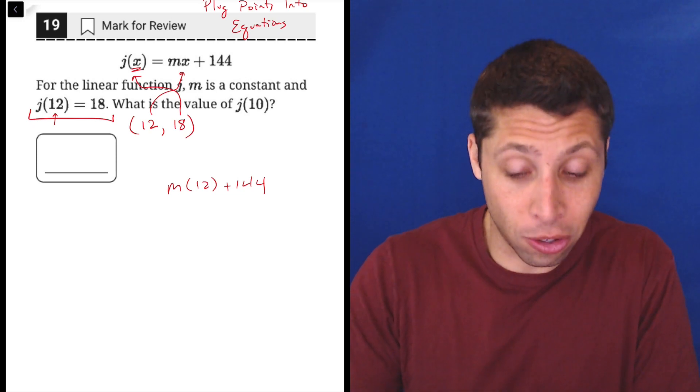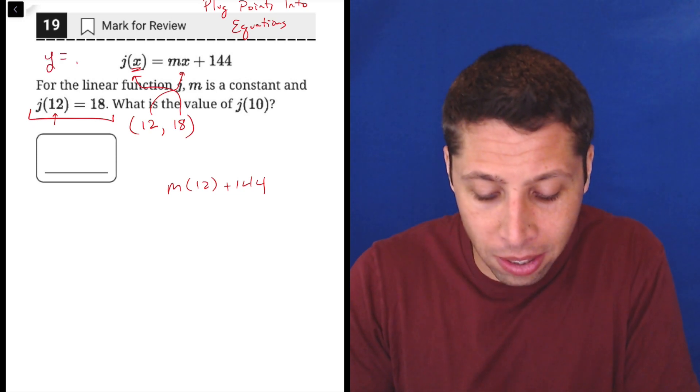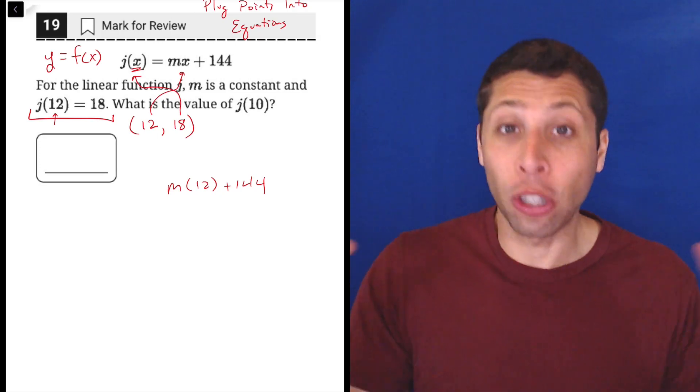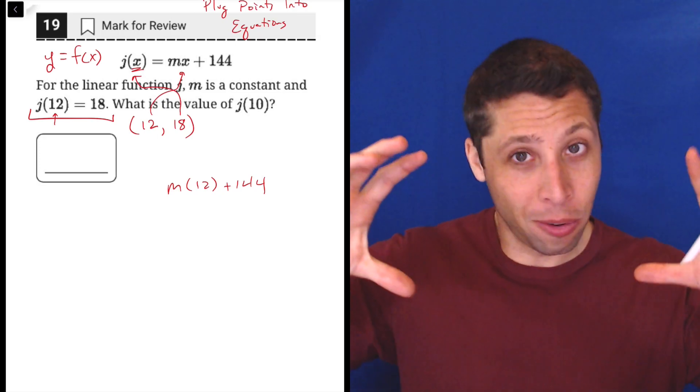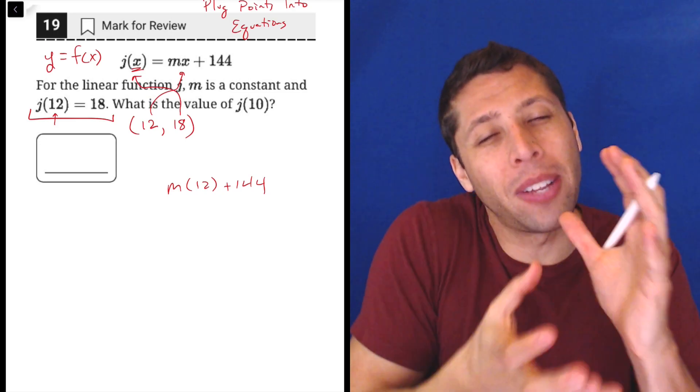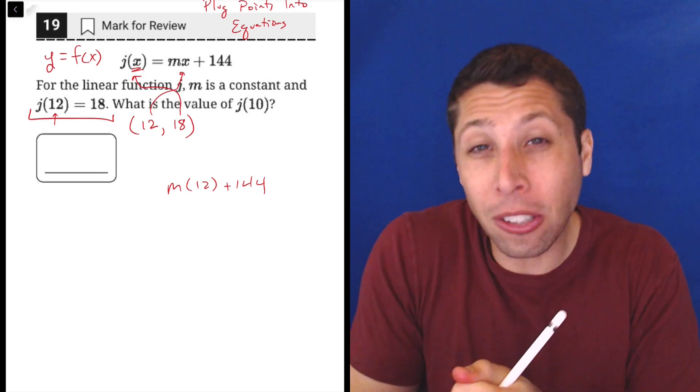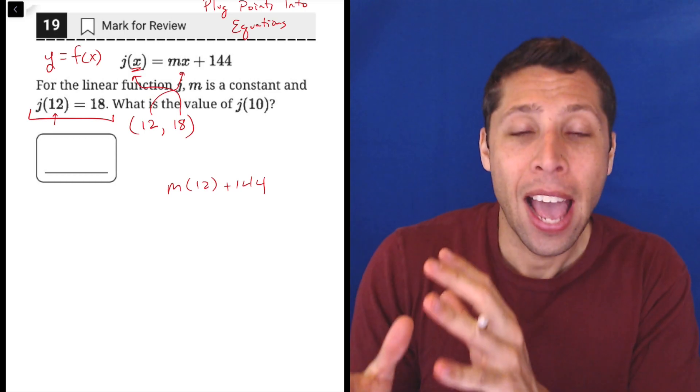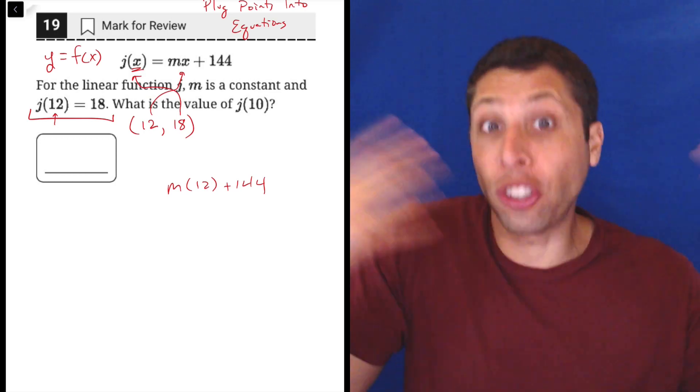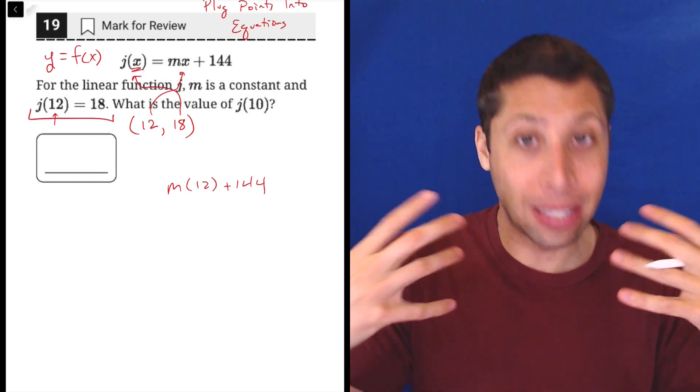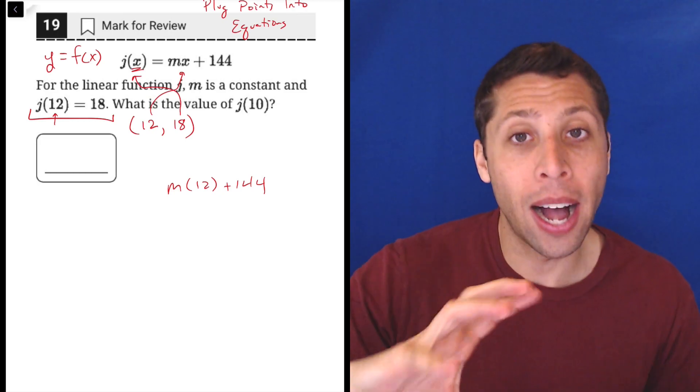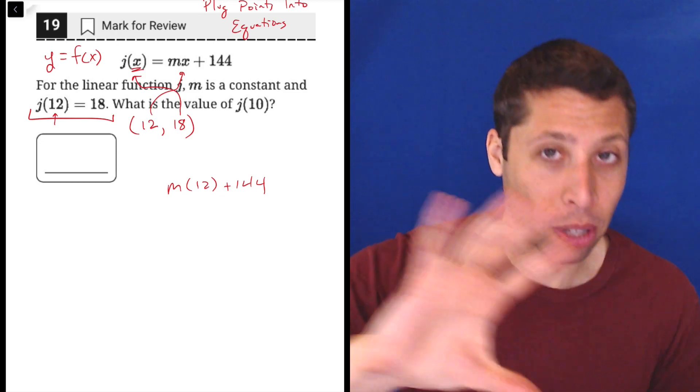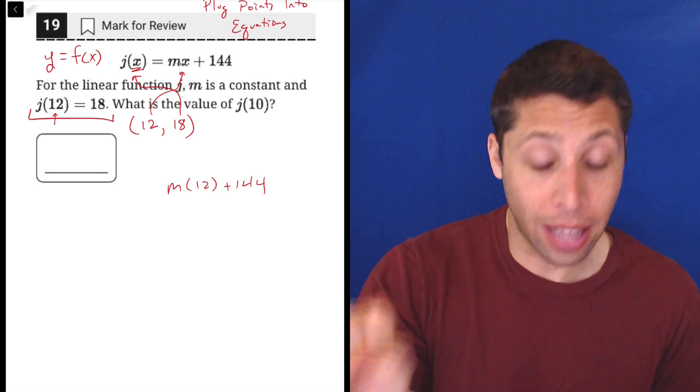You might even see this on a lot of questions that involve function notation. They might tell you just explicitly y is equal to f of x. It's basically just shorthand for what I'm saying. That when we use function notation, we're kind of like changing the way the y looks, but it still functions the same way. It's still kind of like its own thing. And so here it's called j of x for whatever reason, but it's still the same. It's behaving like a y. 18 is our y value, the y coordinate of this point. So that's going to go in for all of that stuff on the left.